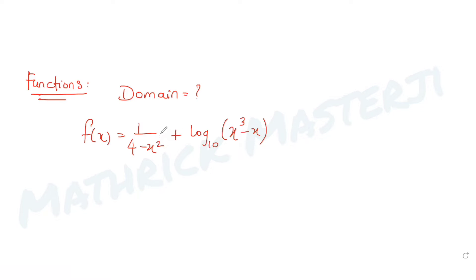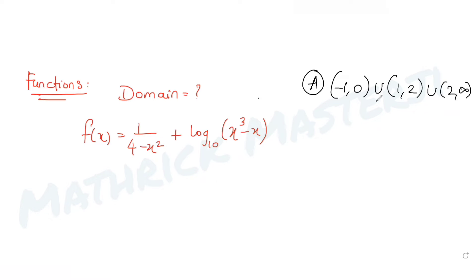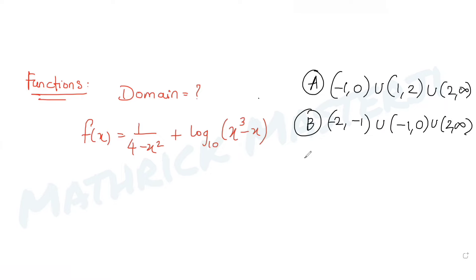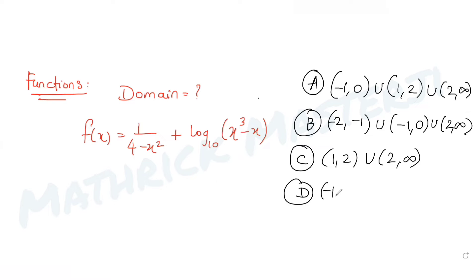We need to find the domain of this function. The answer choices are: option A — x lies between (-1, 0) or (1, 2) or (2, ∞); option B — between (-2, -1) or (-1, 0) or (2, ∞); option C — between (1, 2) or (2, ∞); and option D — {-1, 0, 1, 2} union (3, ∞).